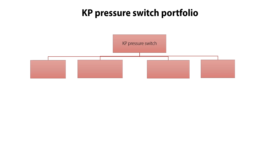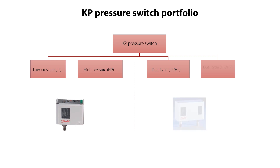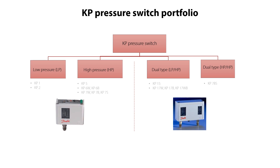Here you see an overview of the KP Pressure Switches portfolio. This includes a low pressure type called LP, a high pressure type called HP, a dual type for both low and high pressure called LP/HP, and a dual type for two-step safety for high pressure called HP/HP. The different KP Pressure Switch types are identified by their type designation, as seen here. Please check the KP datasheet for more details about the features of the different types.